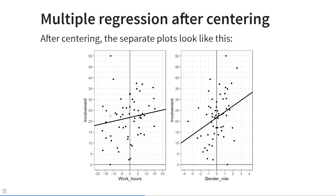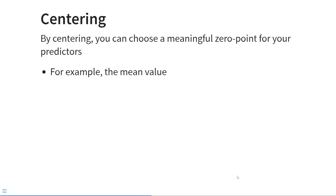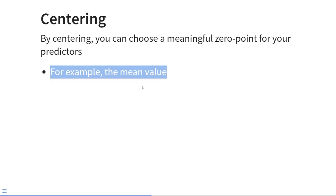After centering, the separate plots from our multiple regression model show both regression lines beautifully in the middle of the data again. That corresponds to intersecting the three-dimensional plot at the average value of the other predictor. By centering, you can choose a meaningful zero point for your predictors. The most common value to use is the mean, but in future lectures we will also center around other values.